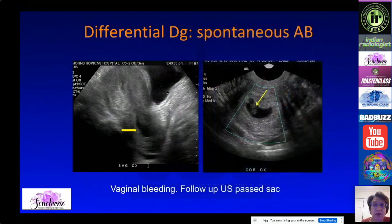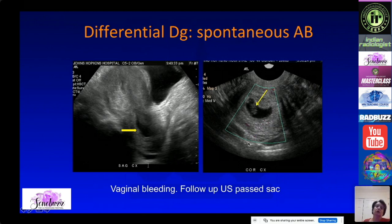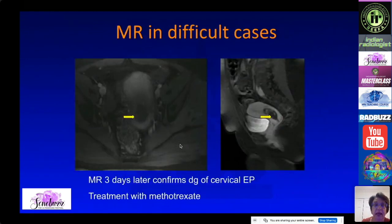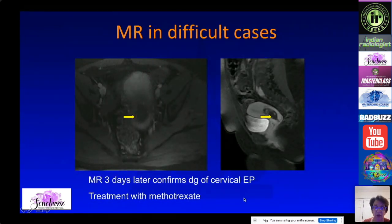In another case, there was a gestational sac in the cervix without heart motion, making it unclear whether this was a cervical ectopic with embryonic demise or an abortion in progress. A follow-up ultrasound 24 hours later showed it was gone — confirming abortion. If still uncertain, MRI can show ectopic implantation in the cervix with a closed cervical os on sagittal imaging. This case was treated with methotrexate.